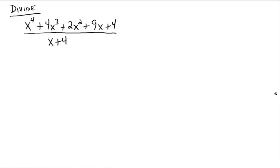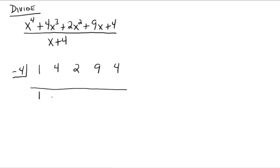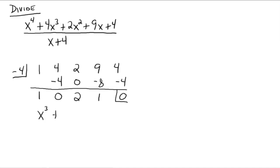Let's do one more because I want to tie it into another concept. The k value is negative 4, so negative 4 goes inside the half box. The coefficients out to the right are 1, 4, 2, 9, and 4. Skip a line, draw a line — first coefficient comes down. Negative 4 times 1 gives negative 4 above the line; add to get 0. Negative 4 times 0 gives 0; add to get 2. Negative 4 times 2 is negative 8; 9 and negative 8 add to give 1. Negative 4 times 1 gives negative 4, and your remainder is 0. Since we started with x to the 4th, the quotient is x cubed plus 2x plus 1, and there's no remainder to add on.